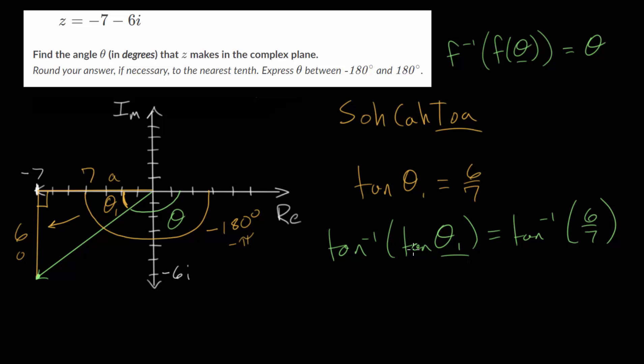Now on the left-hand side, the tangent and the inverse tangent essentially cancel each other out. And we just get theta1 is equal to the inverse tangent of 6 over 7. And again,